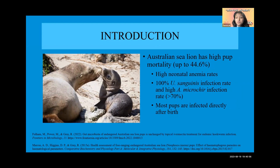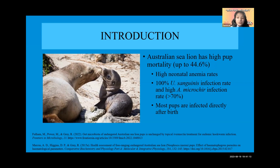Neonatal anemia is really common in pinniped pups as a result of the huge environmental changes between being a fetus and being a self-sustaining organism. The Australian sea lion has a 100% infection rate of Uncinaria sanguinis and a high Antarctophthirus microchir infestation rate of greater than 70%. Most pups are infected with parasites from the time they're born.